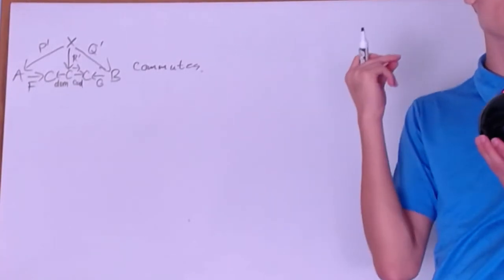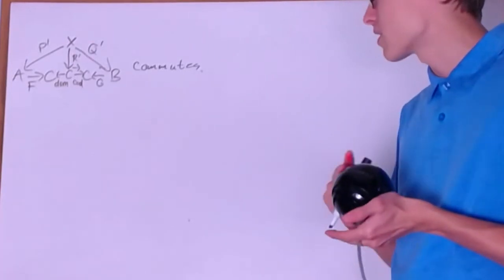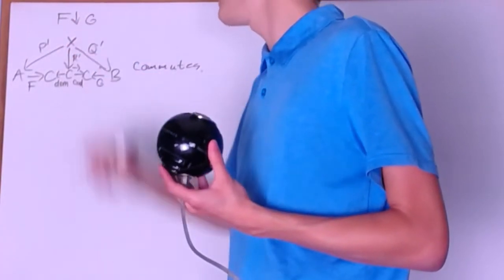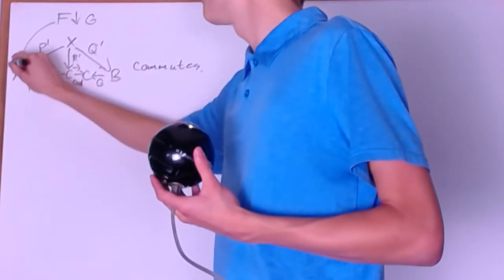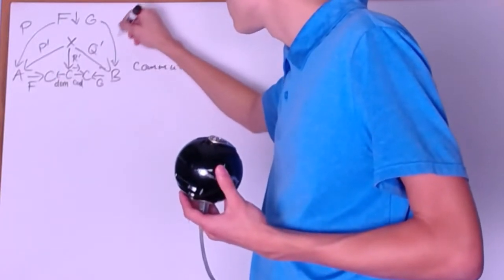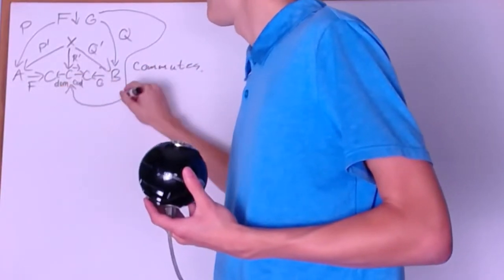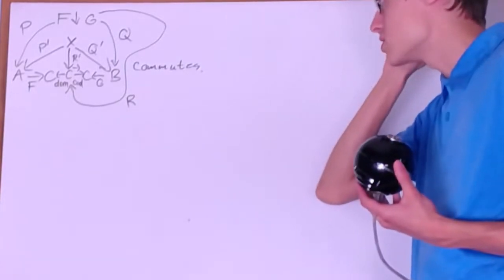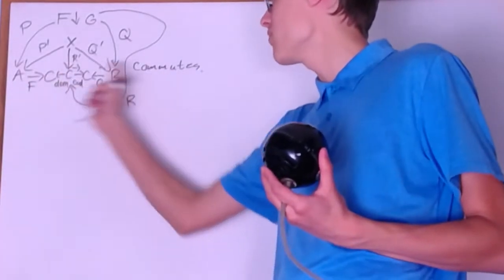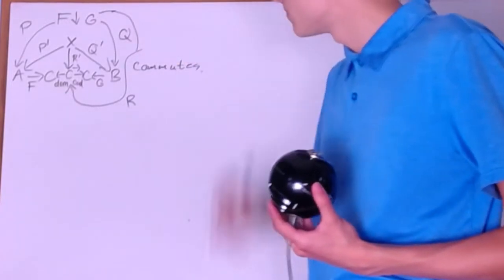This is going to be a formal statement of what it means to look like the comma category. Right here, we can have the comma category F down G, and you're going to have the two projections. One of the projections brings you down to A, the other projection brings you down to B. And you have the third projection that goes around — its name is R — and it brings you down to the arrows, also making this bottom portion of the diagram commute.